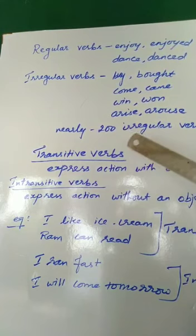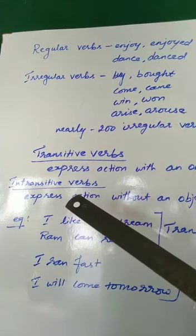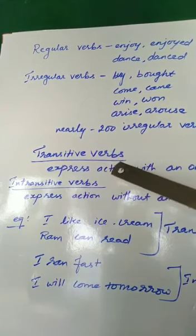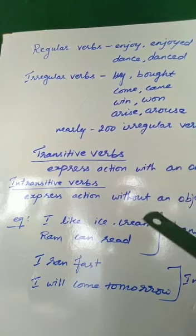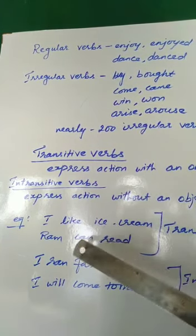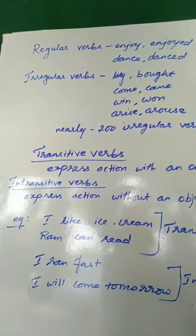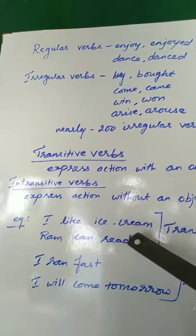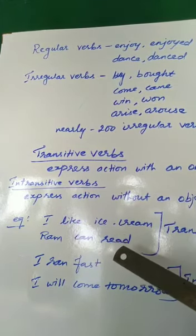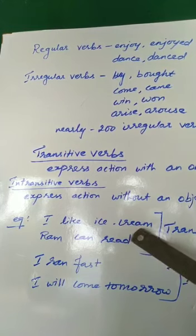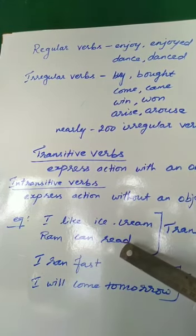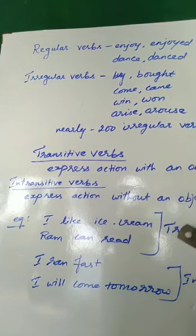Next, we can move to transitive verbs and intransitive verbs. What are transitive verbs? Transitive verbs are verbs which can express an action with an object. For example: I like ice cream. An object answers the question 'what?' — What do I like? Ice cream. So transitive verbs will have an object. They can also be changed to passive form: I like ice cream → Ice cream is liked by me.